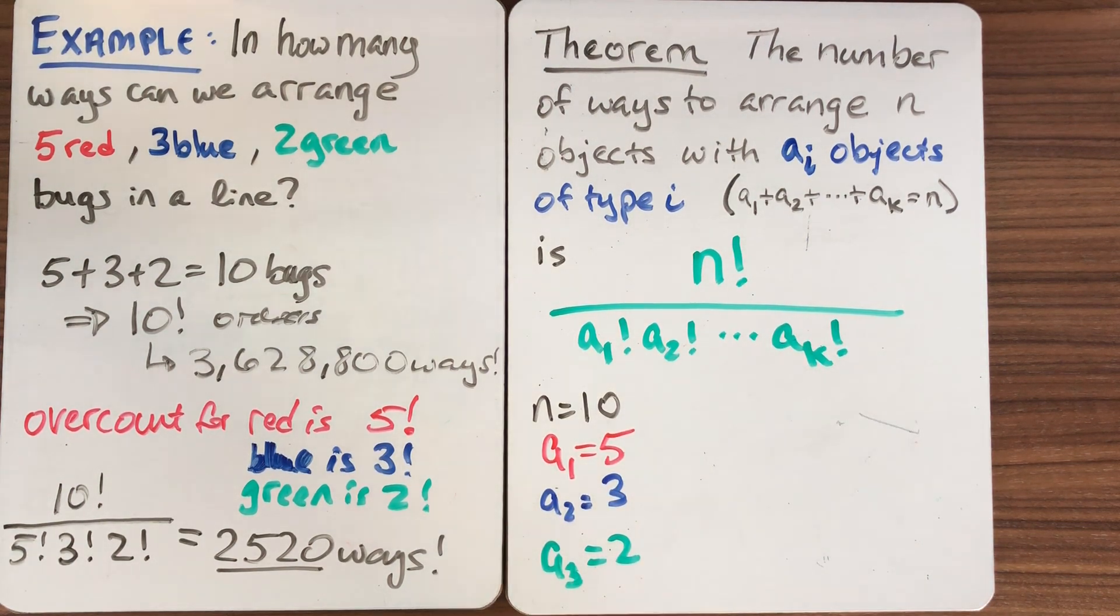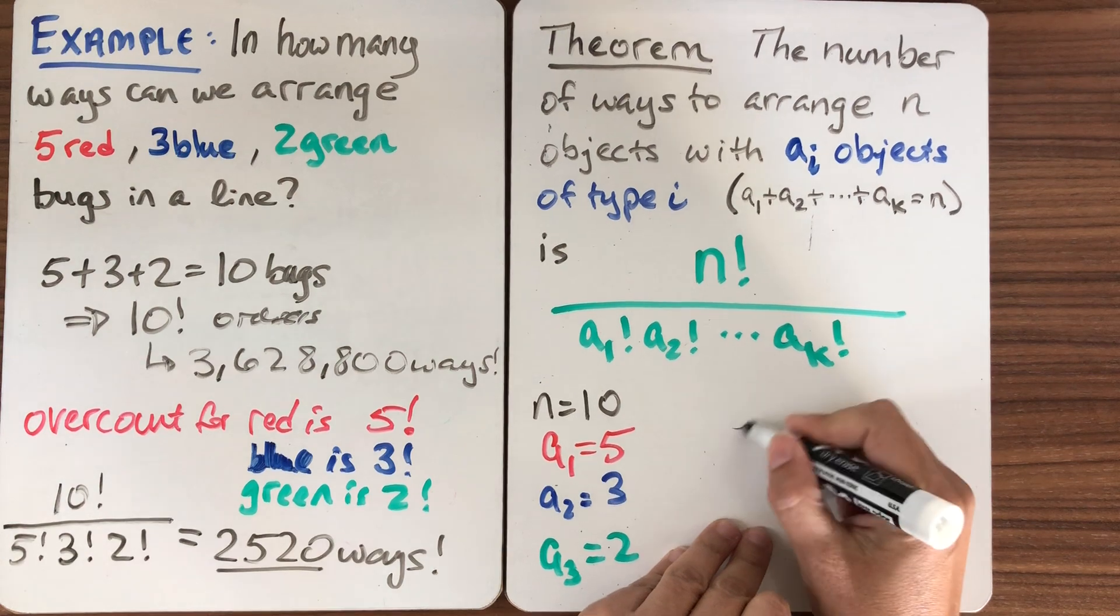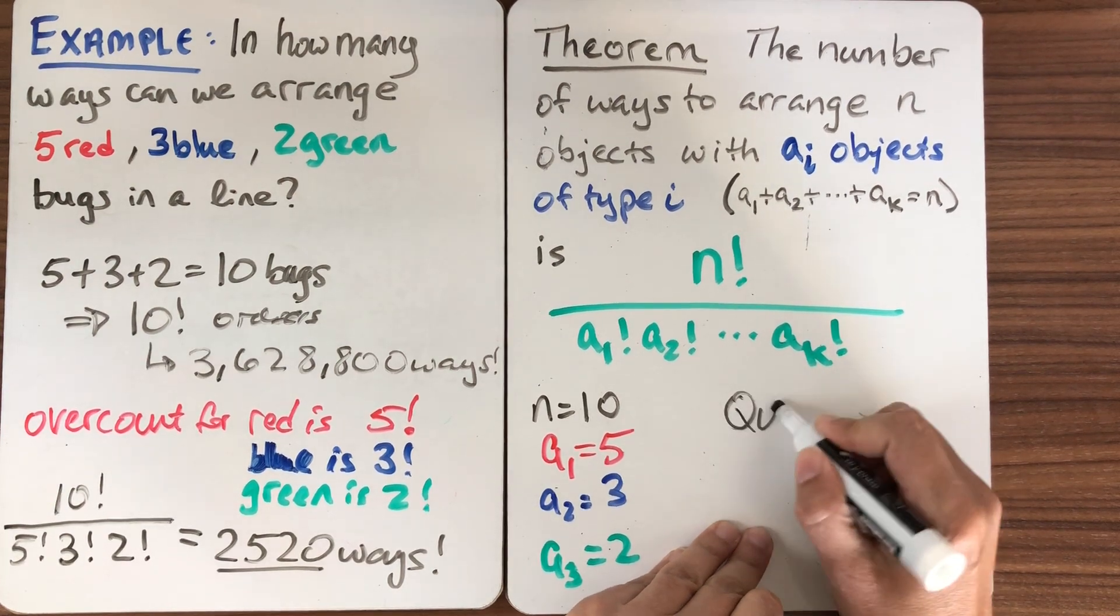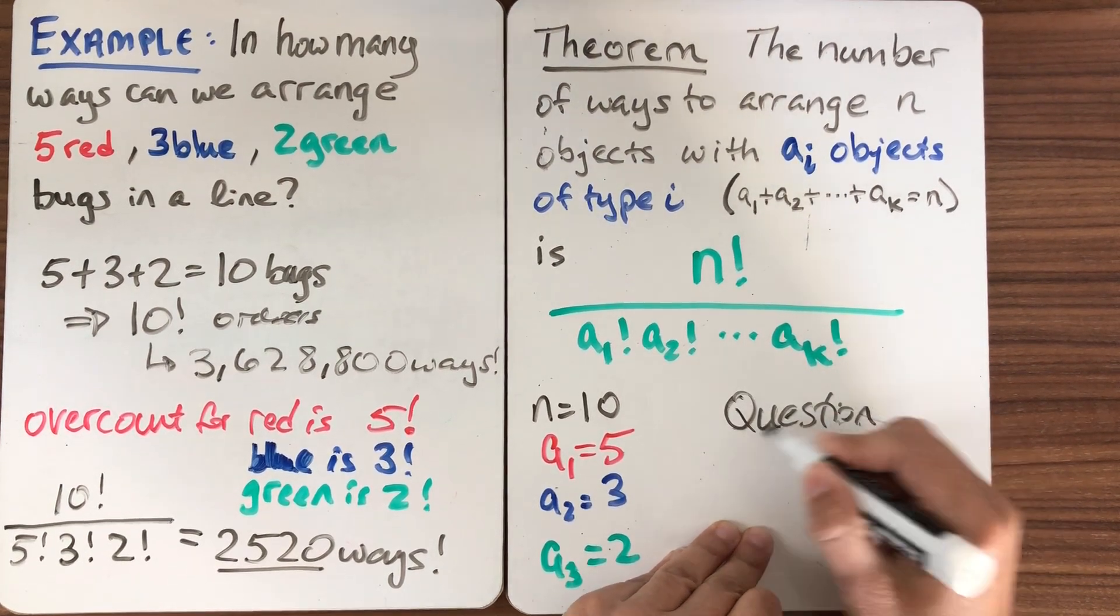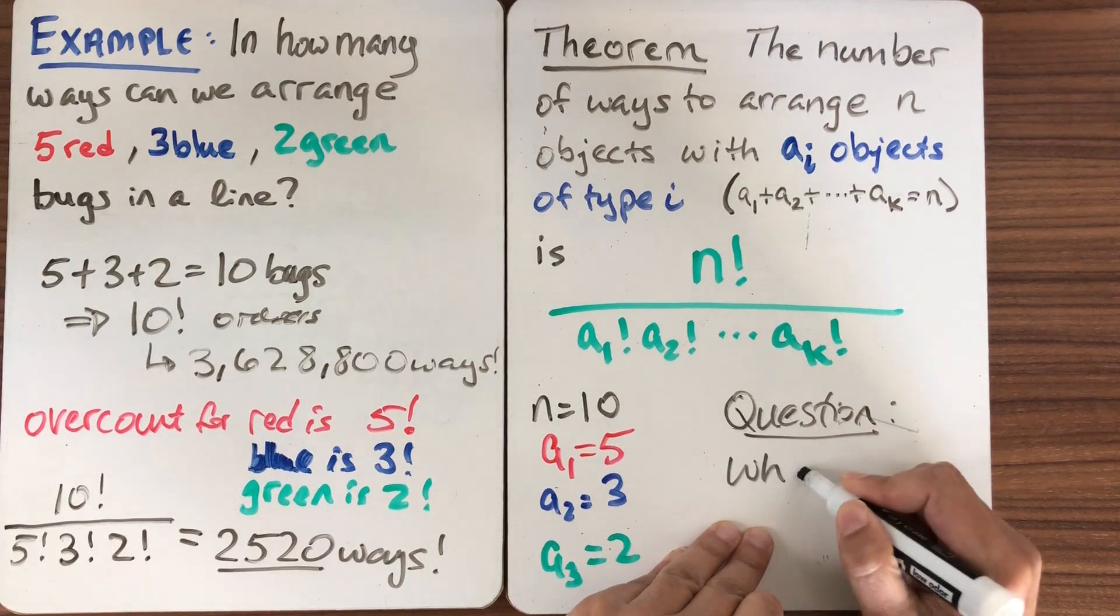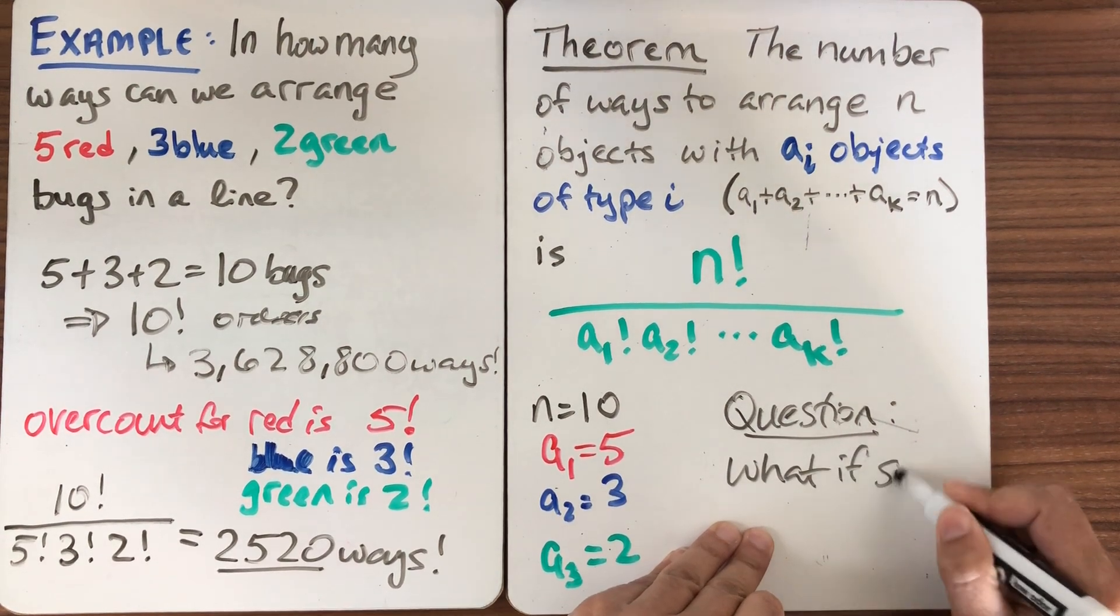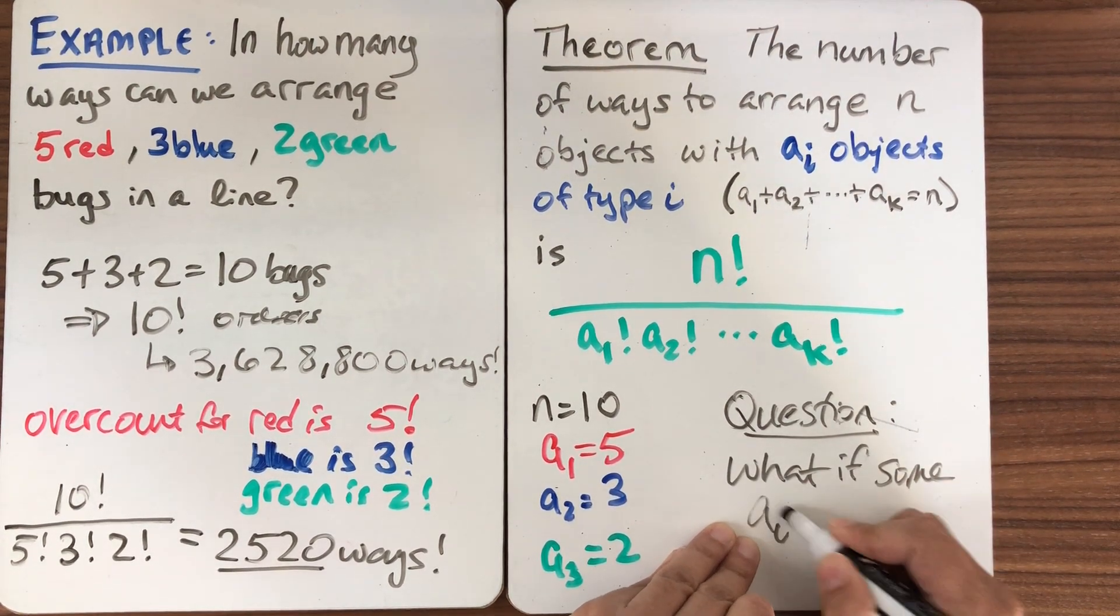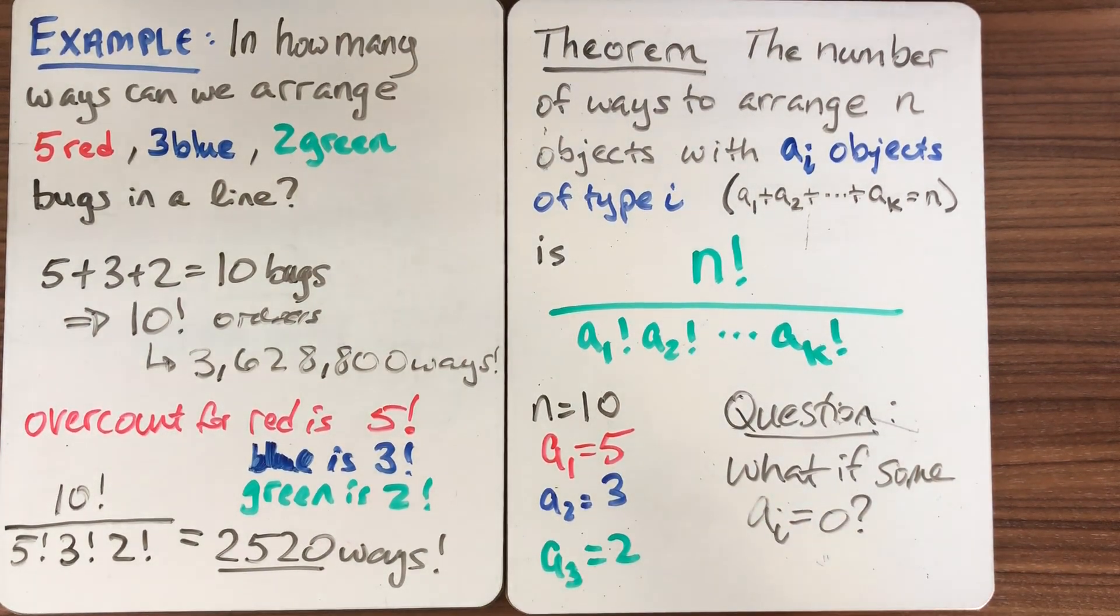Then what we get is just a bunch of 1s on the bottom taken as a product. So we just get n factorial. And another thing to ask yourself, just to sort of check your understanding, is what happens if one of these a1s is equal to 0? So think about that and see if the formula still works in that case or if there's some adjustment that you have to make. So think about it.